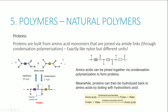Natural polymers include proteins and carbohydrates. Proteins are built from amino acid monomers joined via amide links through condensation polymerization. Each amino acid has both a carboxylic acid group and an amine group. The OH from the carboxylic acid reacts with the H from the amine group, forming a peptide bond (amide link) and releasing water. You can reverse this process — hydrolyzing the protein by boiling with hydrochloric acid — to break it back down into amino acids.